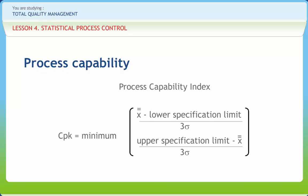process capability indicates what the process can deliver under stable conditions when it is said to be under statistical control. Process capability is a range of natural variability in a process, what we measure with control charts.